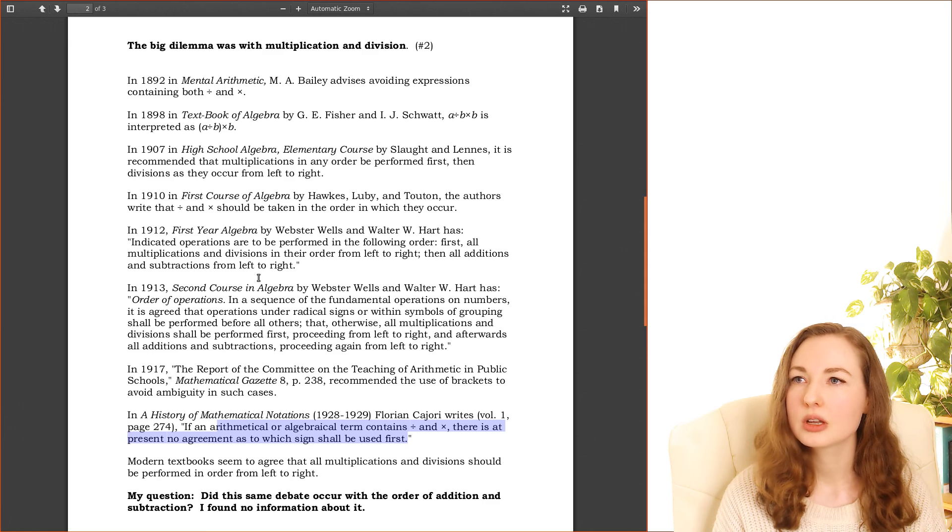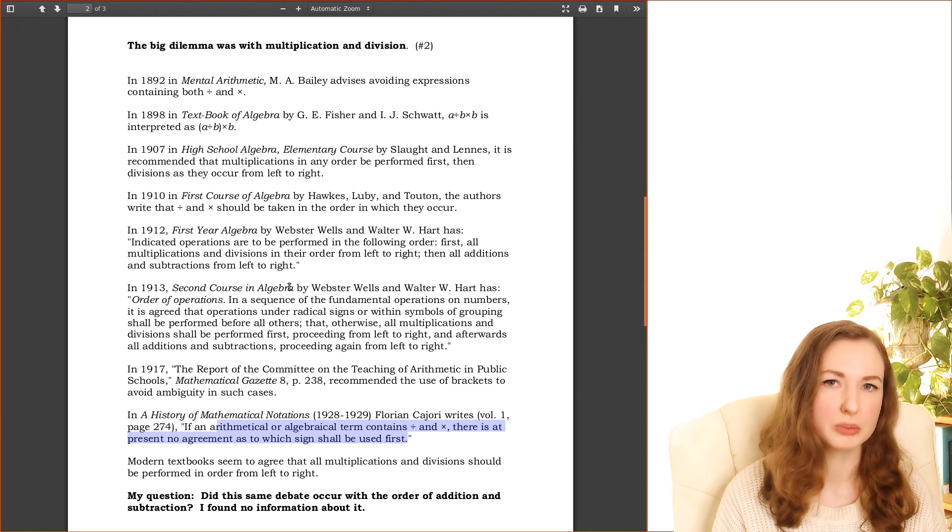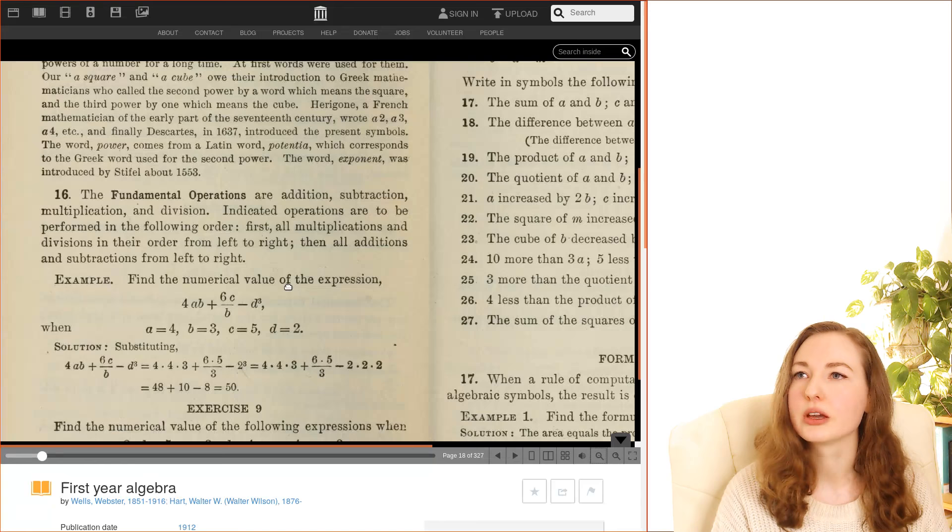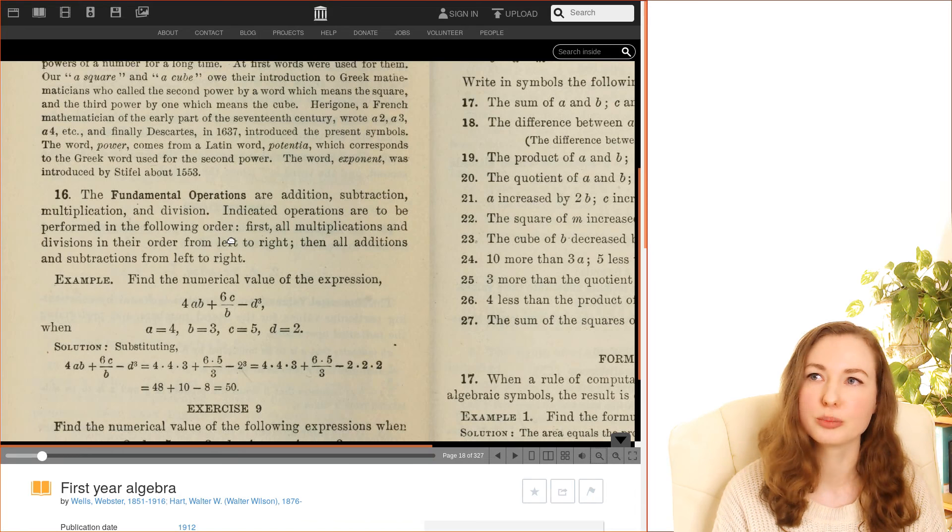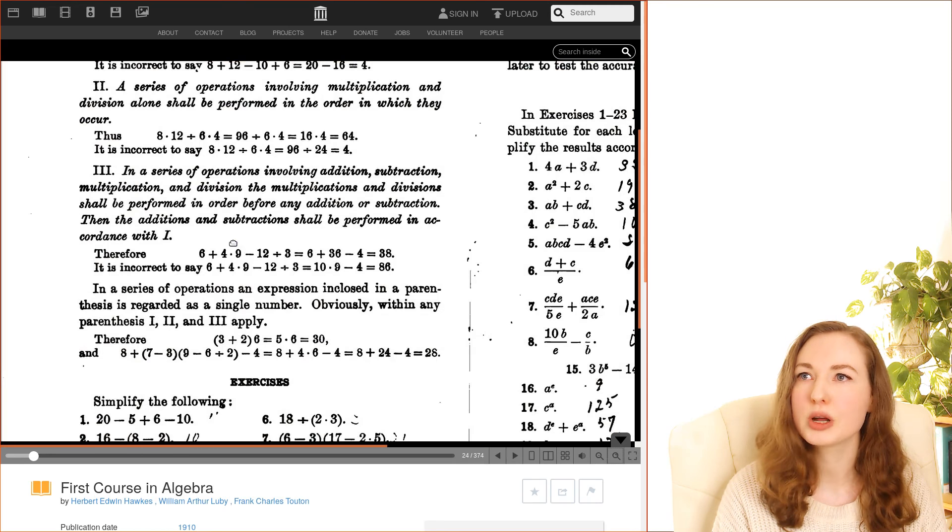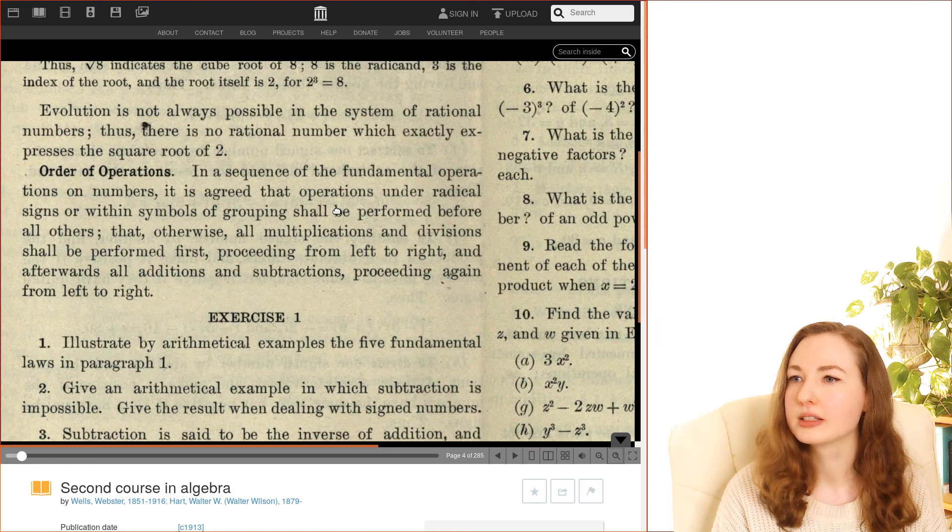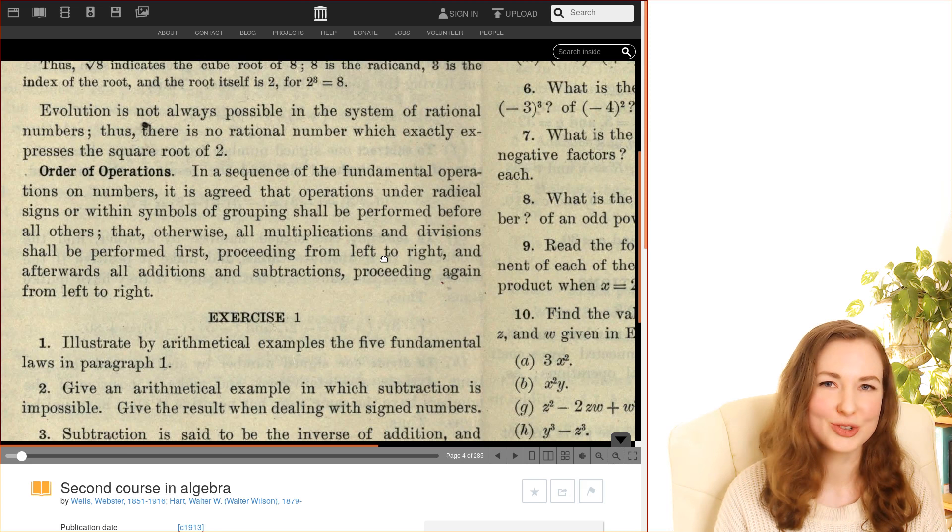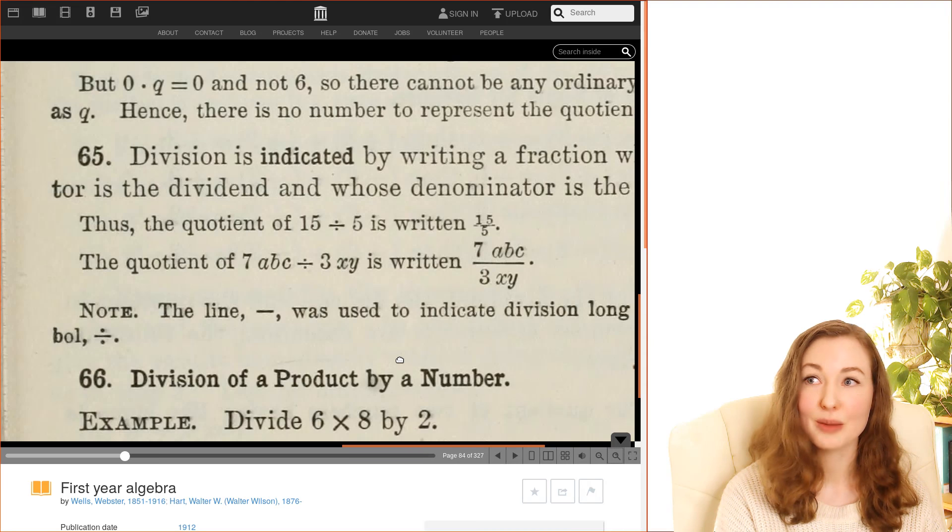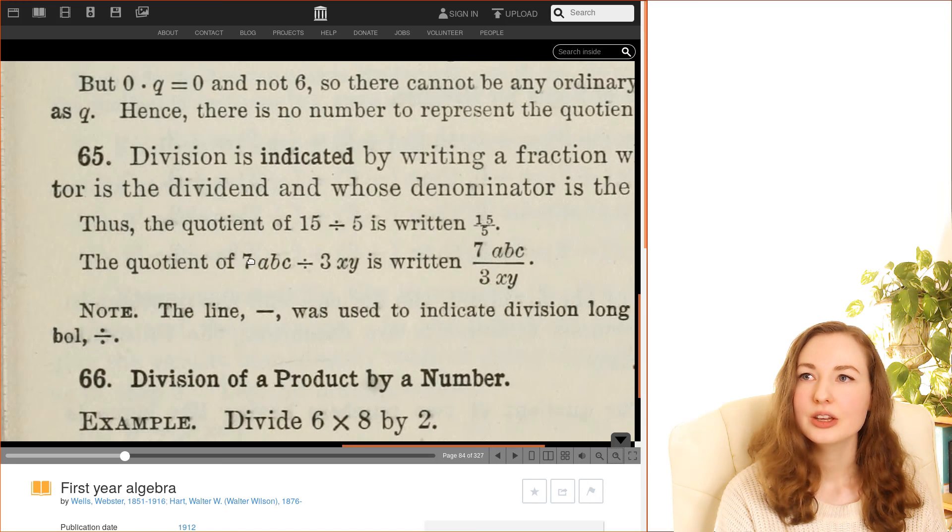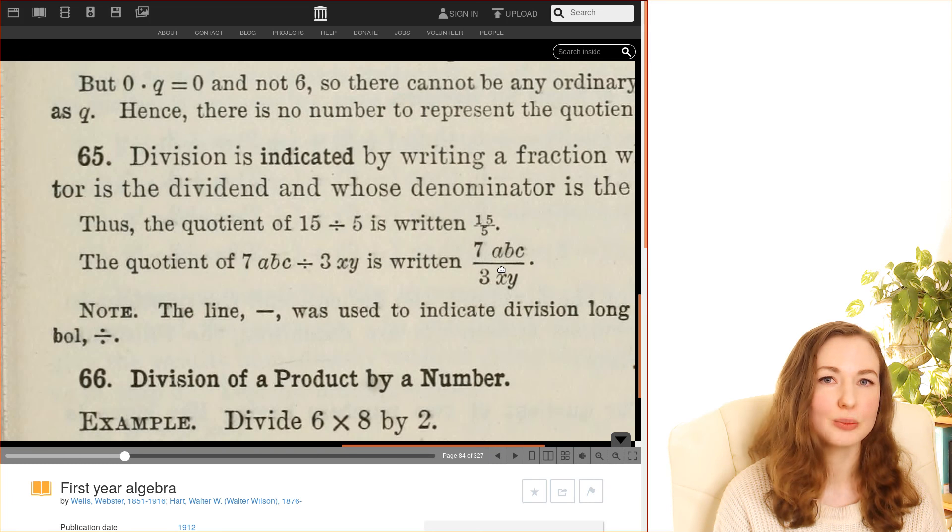So there's these three books that are putting forth that idea, this PEMDAS idea. Now let's have a look at them. So first year algebra, that's saying all multiplications and divisions in their order from left to right. Then there's first course in algebra which says something similar, and second course in algebra. Similar thing again. Now what's really interesting though is that if you actually read through these books, all three of them break that rule when it comes to juxtaposition. For example, in first year algebra you see expressions like this being taken to mean this, which is actually following PEJMDAS.